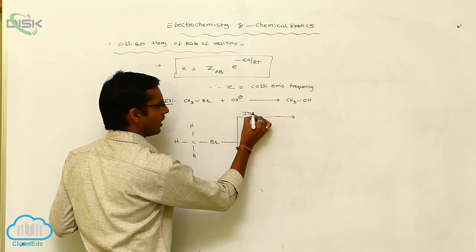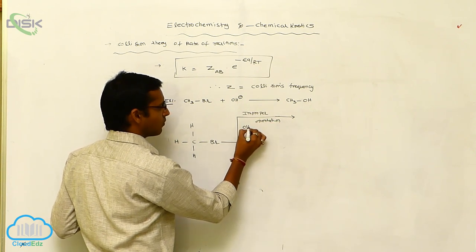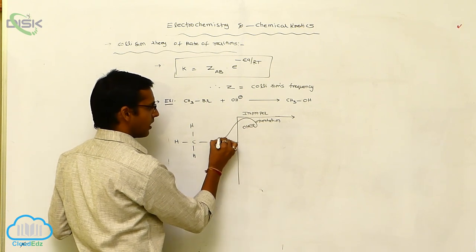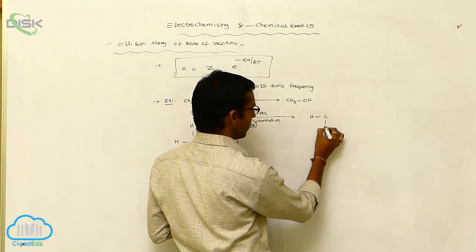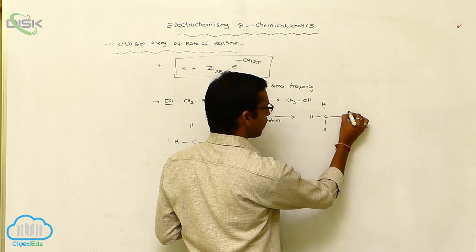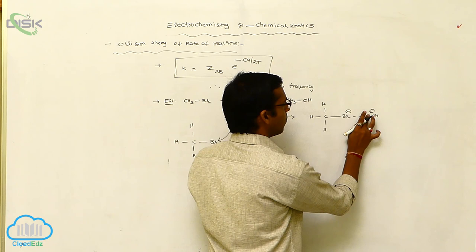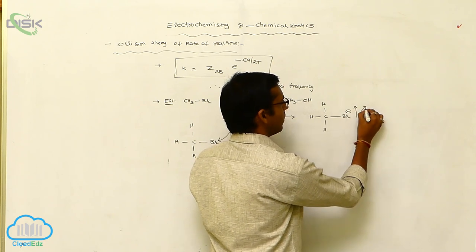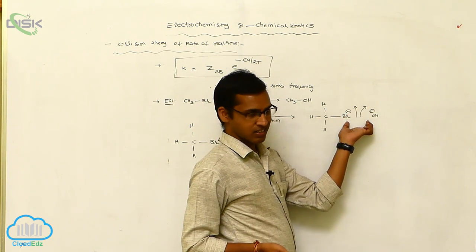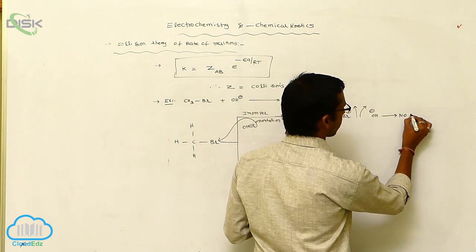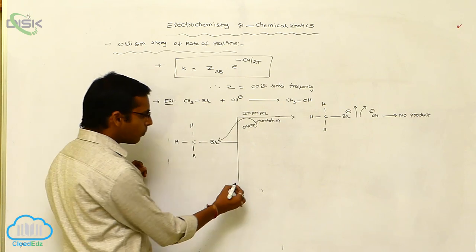First is improper orientation: the attacking of OH⁻ ion is directed towards the bromide ion. Since bromine carries a negative charge and OH⁻ also carries a negative charge, similar charges cause more repulsion and more steric interactions. This results in no product being formed.